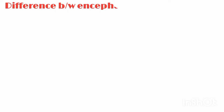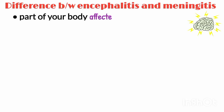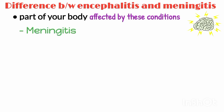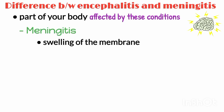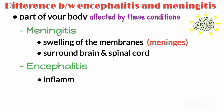The biggest distinction between encephalitis and meningitis comes down to the part of your body that these conditions mostly impact. Meningitis is a swelling of the membranes, also known as meninges, that surround your brain and spinal cord. Encephalitis is inflammation of the brain itself.